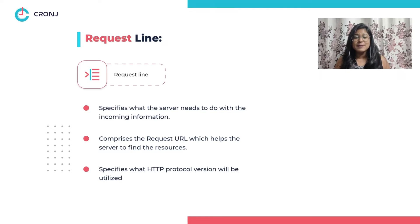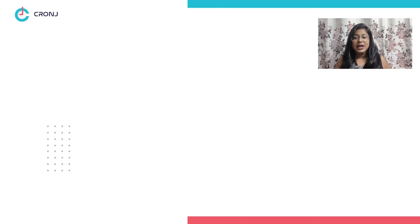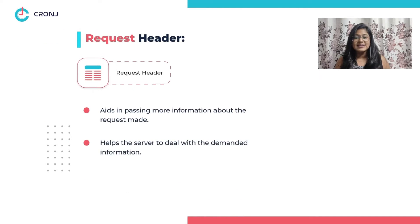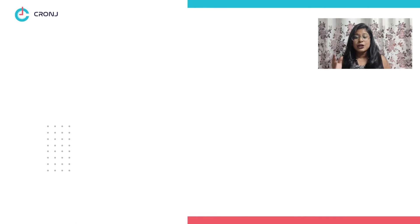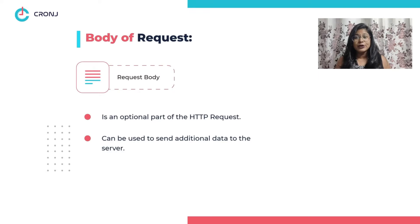Lastly, the request line also specifies what HTTP protocol version will be utilized. The request header aids in passing more information about the request, which further helps the server to deal with the demanded information. The body of request is an optional part of the HTTP request which can be used to send additional data to the server.